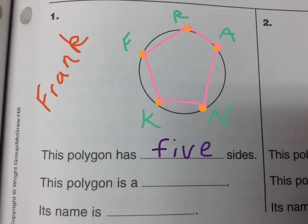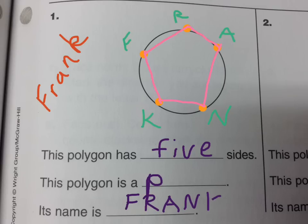This polygon has — I see five sides. Do you know what shape starts with the letter P and means five sides? I'm not going to tell you. If you don't know the name of your polygon you can look it up, ask someone, or just leave it blank and look it up in school tomorrow. And this one is named F-R-A-N-K. As we know, there are lots of different names for this polygon — we could call it K-F-R-A-N or N-A-R-F-K — specifically I think ten different names for this polygon, but one of them is Frank.